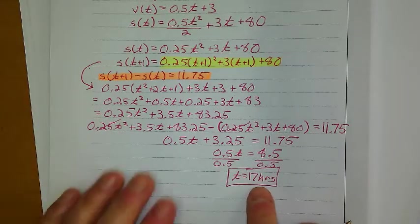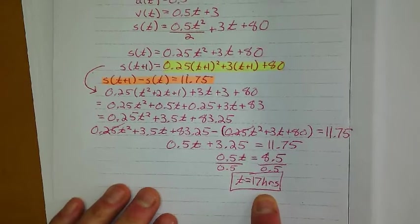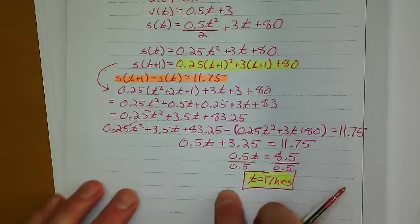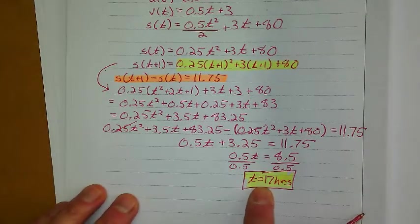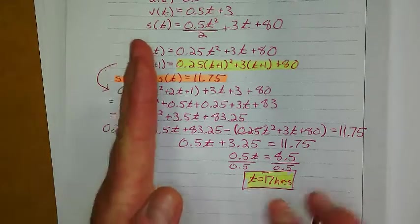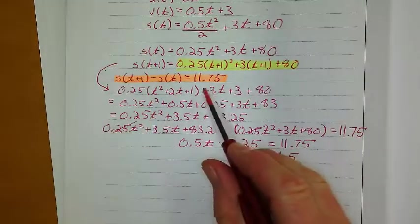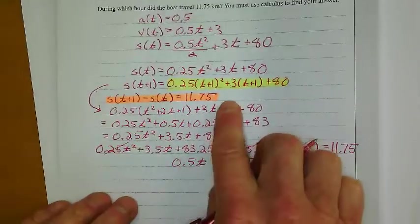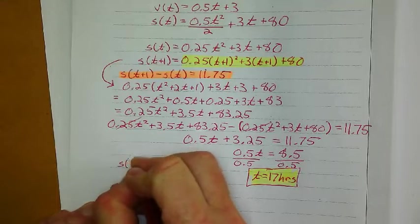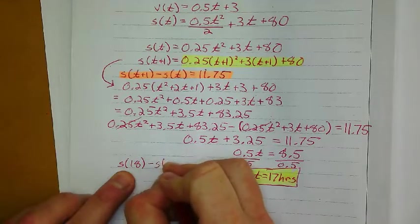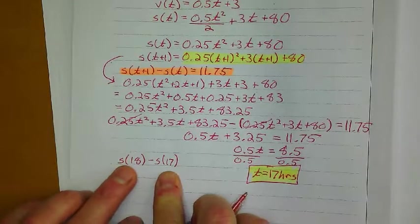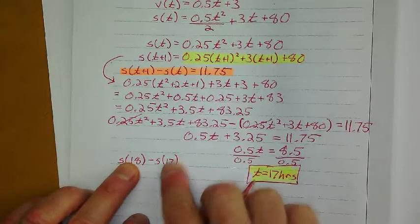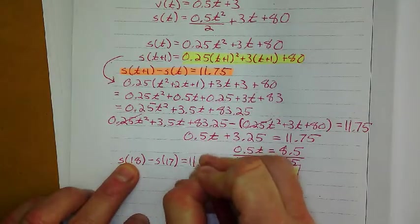And yep, that's a long time to be on that fishing boat. And so if you have time, so that's our answer. So what I was saying is if you have time to check this one, 17 hours means between this, like from 17 hours to 18 hours is when it's going to travel this much. And to check this, you've got your displacement formula right here. The difference between the 18th hour and the 17th hour, which I did check. If I substitute that in, I will get 11.75.